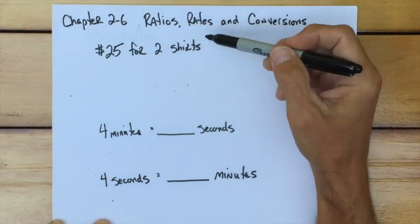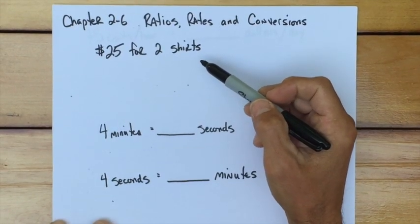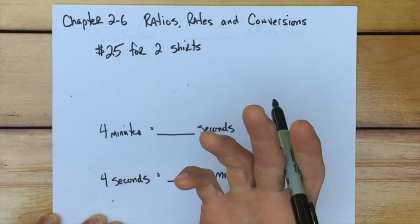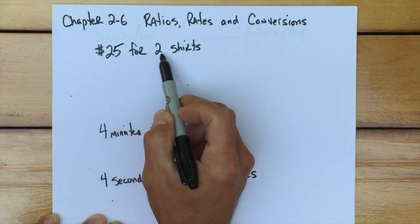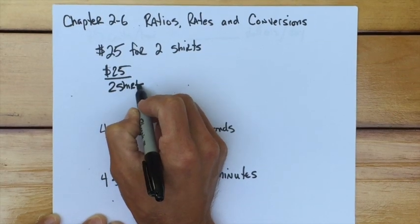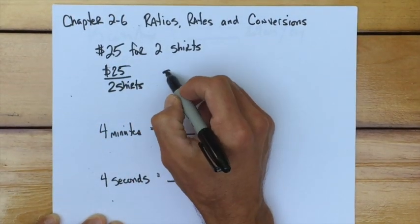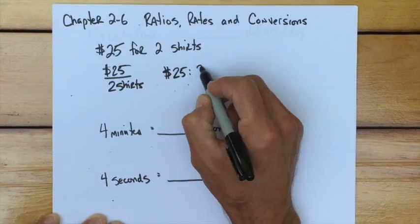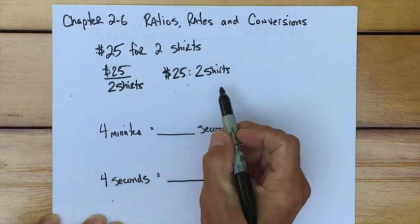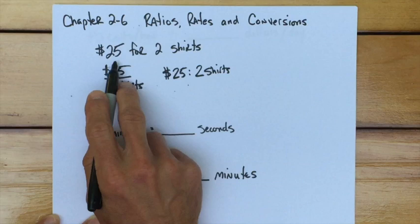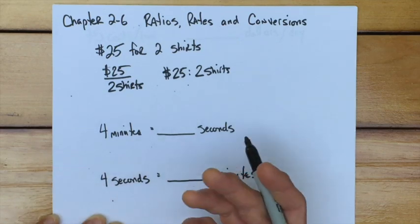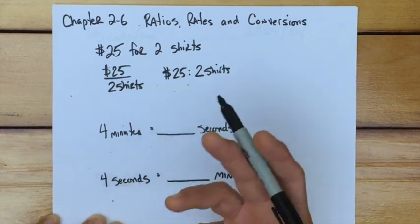Now, a ratio, let's clarify, is just a comparison of two numbers using division, but you won't always see it written with division. This is an example of a statement that can be turned into a ratio: $25 for two shirts. You could rewrite that as $25 for two shirts. That's a ratio because it's made into a fraction. You could write $25 colon two shirts. Or you could write it essentially just like it is here. That's a ratio, and it gives you information about how one thing relates to the other. If I have $25, I have two shirts, or I can buy two shirts.